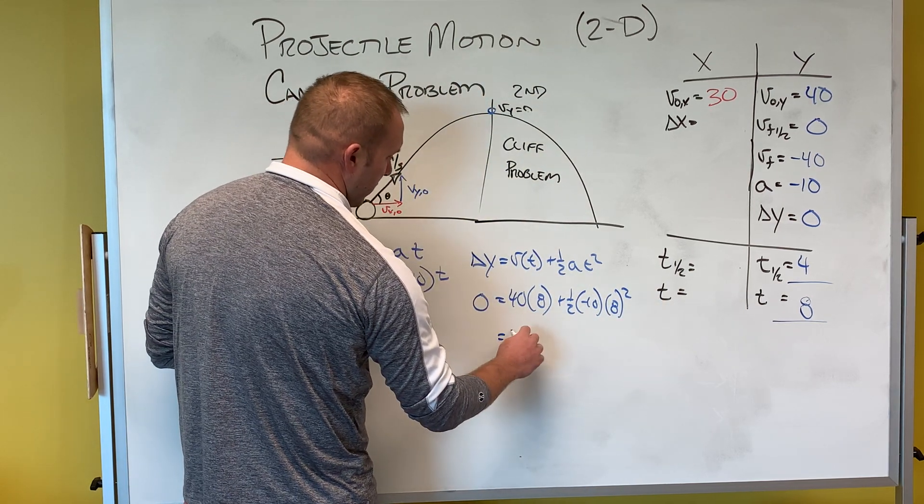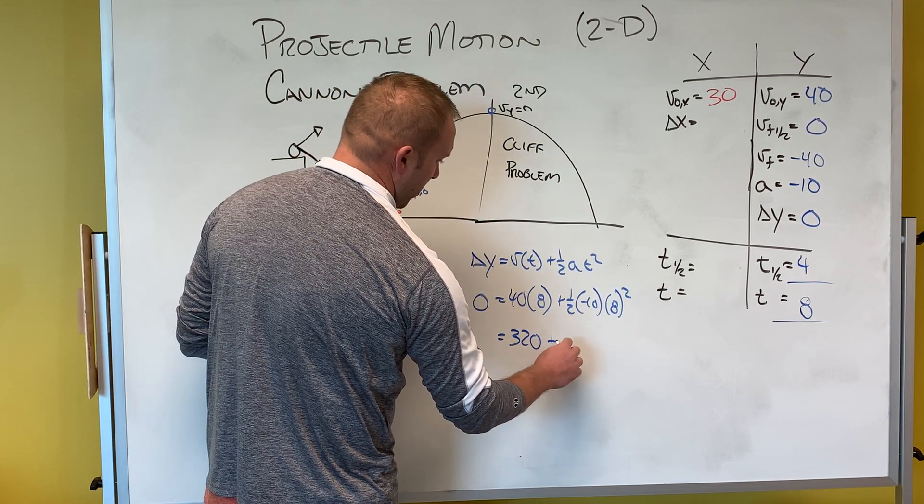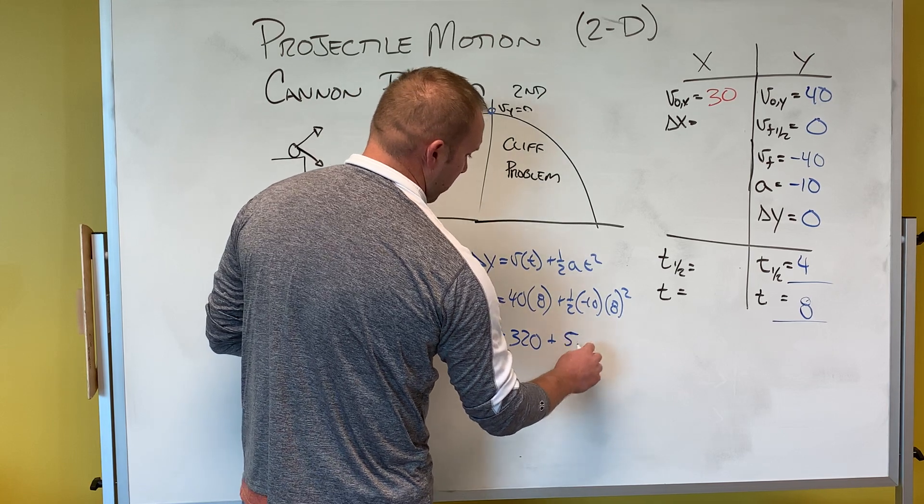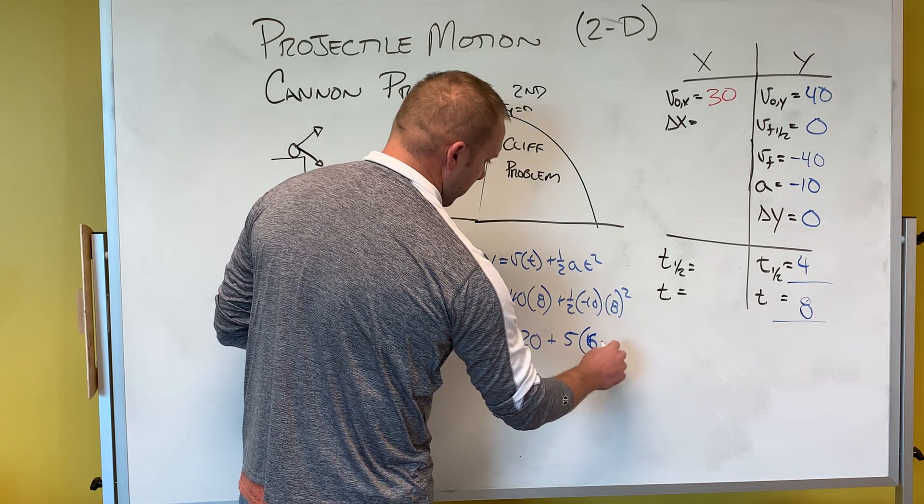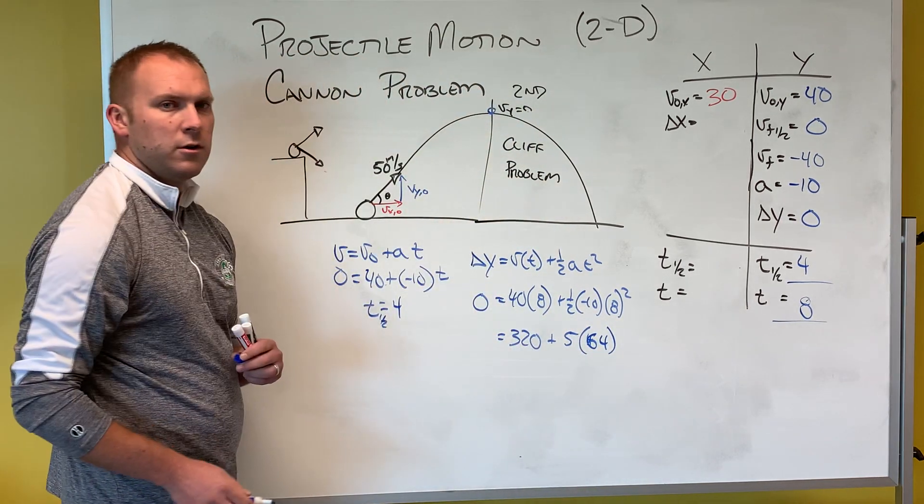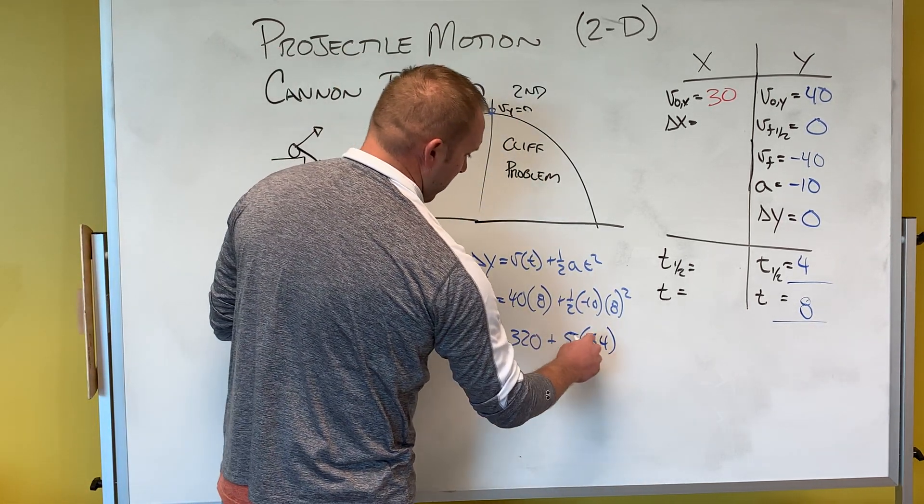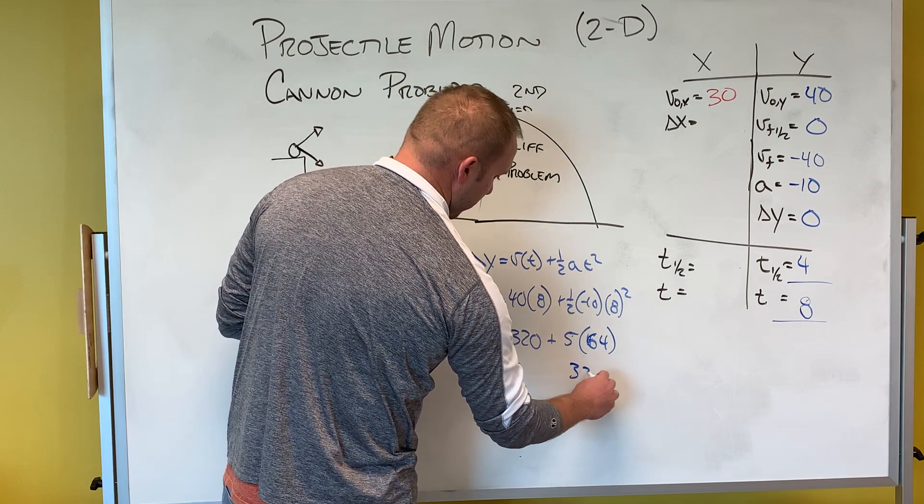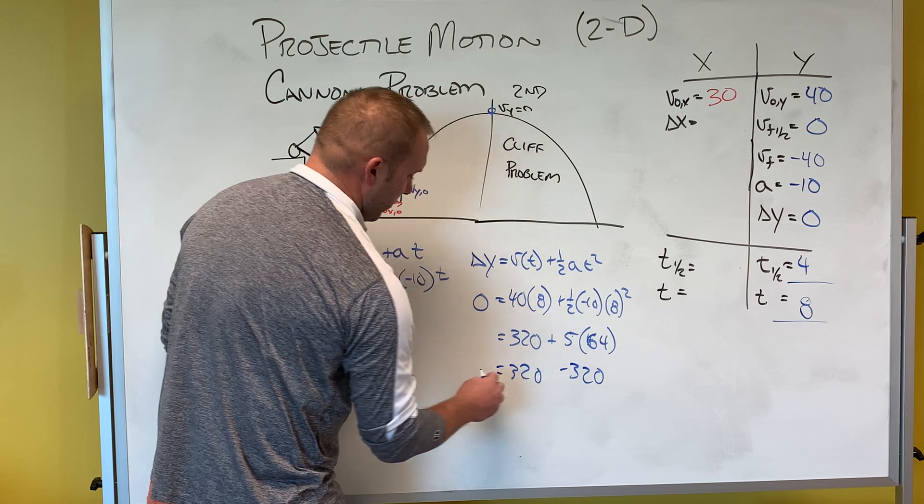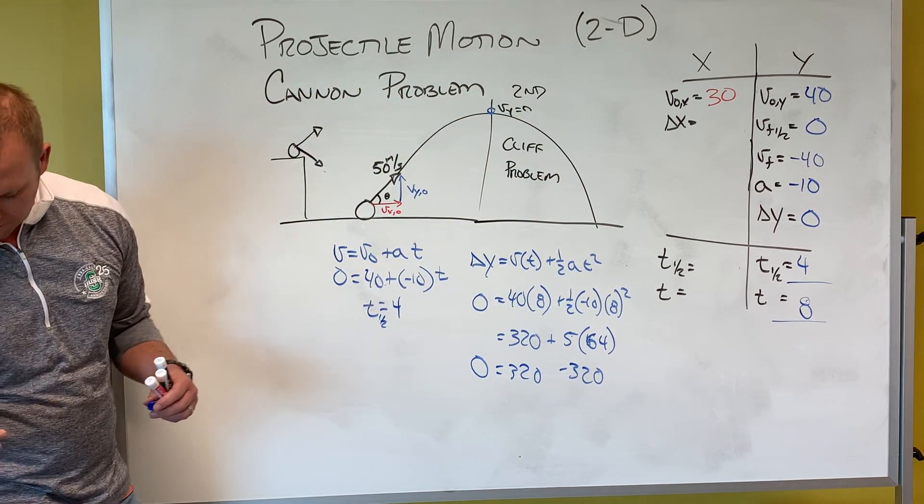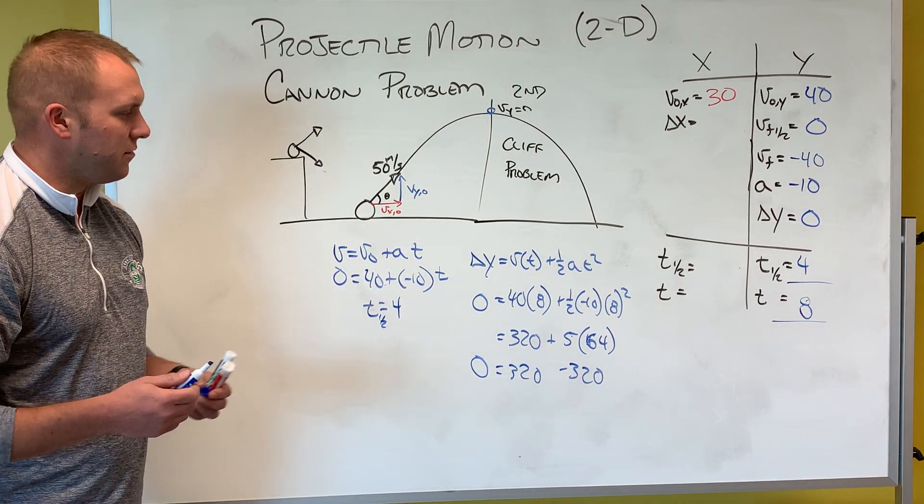This is 320 plus 5 times 64. 64 times 5 is 320 minus. So that proves that the total displacement, that my total displacement is zero.